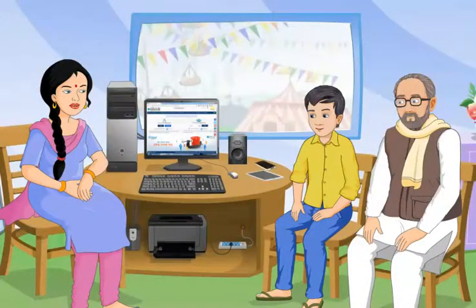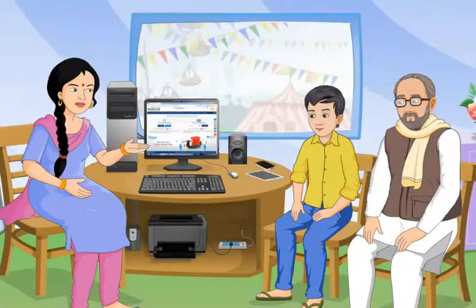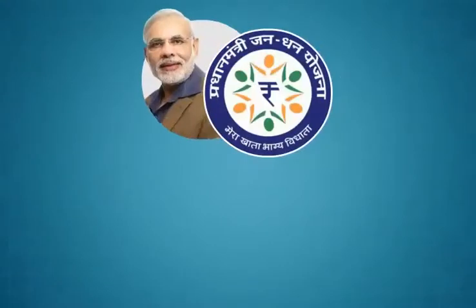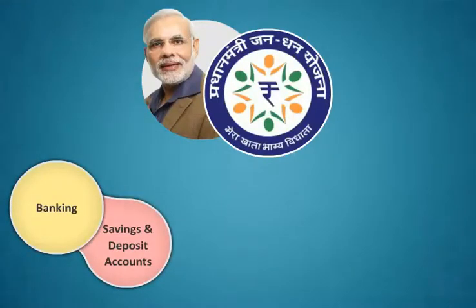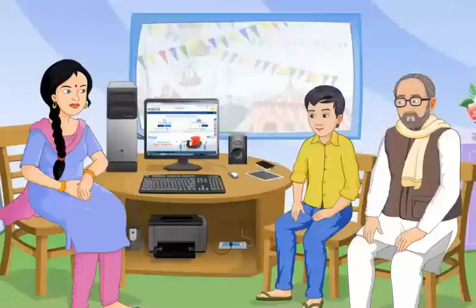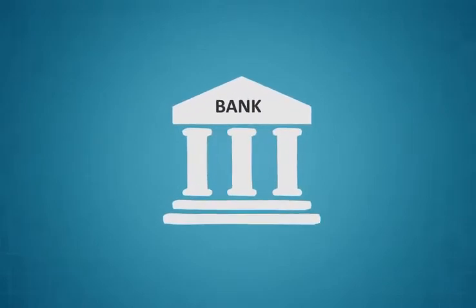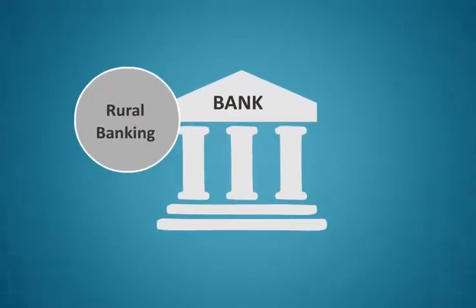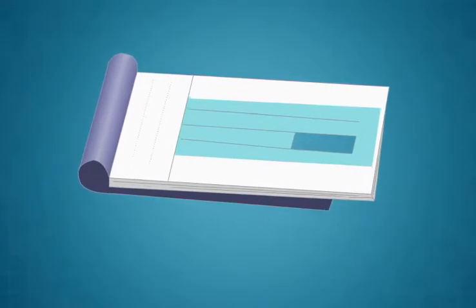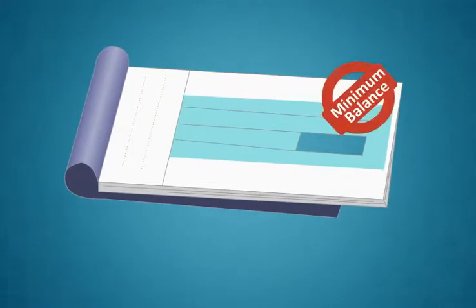You might have heard about Pradhan Mantri Jan Dhan Yojana or PMJDY which is a national mission for financial inclusion. What is the use of Jan Dhan Yojana? It ensures access to financial services namely banking, savings and deposit accounts, remittance, credit, insurance and pension in an affordable manner. From which bank can we avail this service? One can open an account in any bank branch or business correspondent or bank mitra outlet with zero balance. However, if the account holder wishes to get a checkbook, he or she will have to fulfill minimum balance criteria.